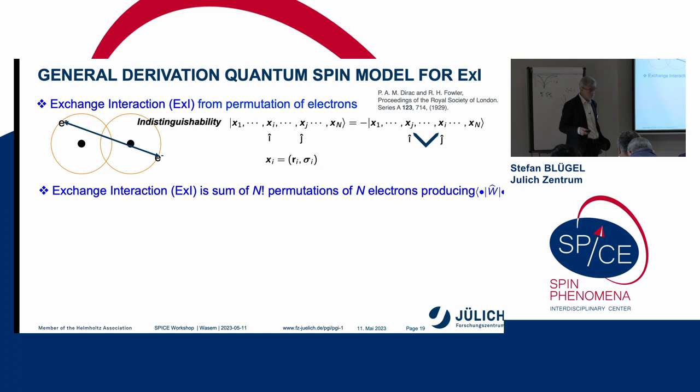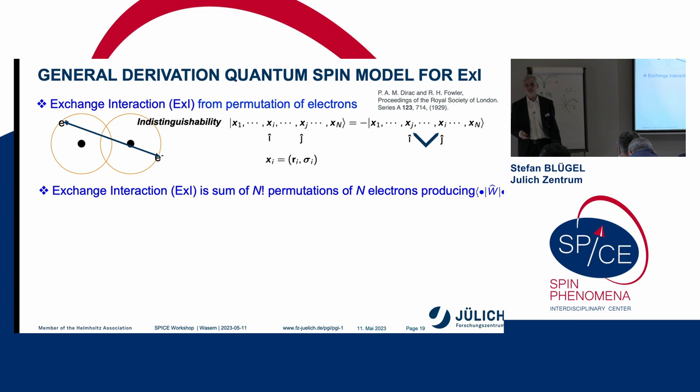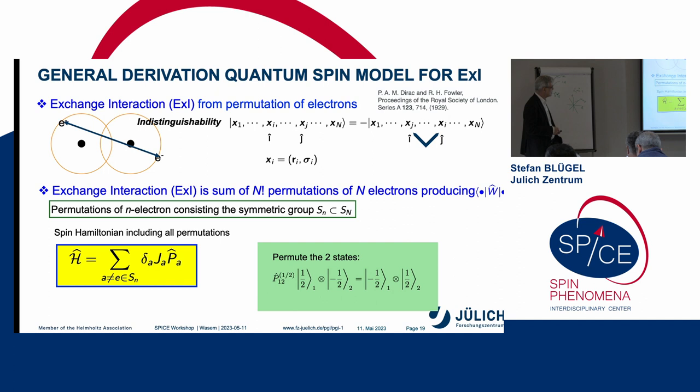And how many permutations you have, you have n factorial permutations, this is in a solid a huge number. And with each of these wave functions, you can calculate the Coulomb matrix element. The Coulomb matrix element itself is only in real space, so you can integrate out the real space and only the spin space remains. And therefore, at the end of the day, you write down your spin Hamiltonian as a Hamiltonian of all possible permutations times this exchange integral, and times a number which is either plus or minus one, depending on whether the permutation is even or not.